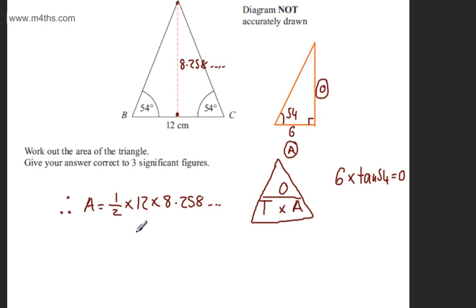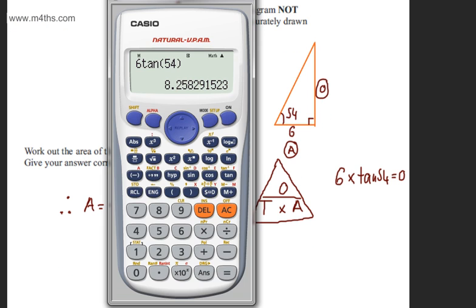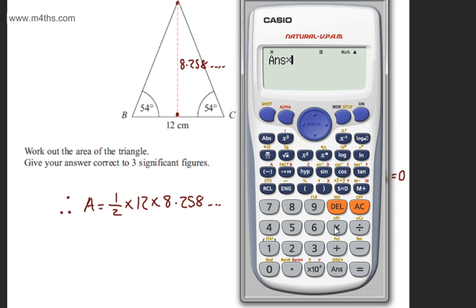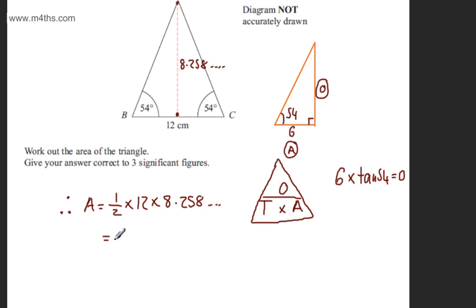So let's go ahead and do that. Essentially all I'm doing is multiplying my answer by 6 if I've got half of 12. So I'm going to multiply this by 6 and that gives me 49.54. So we can say that this is 49.5 cm squared and that now is correct to 3 significant figures.